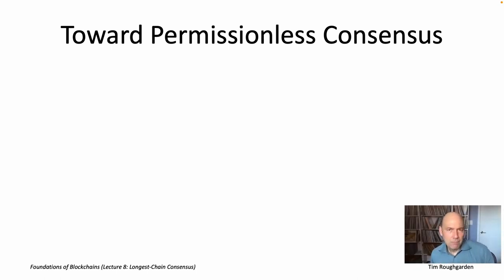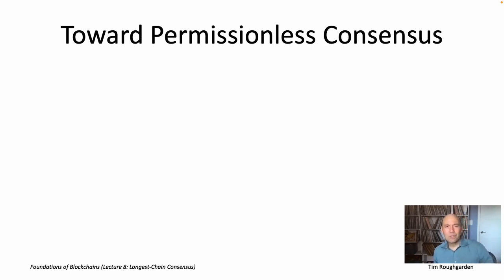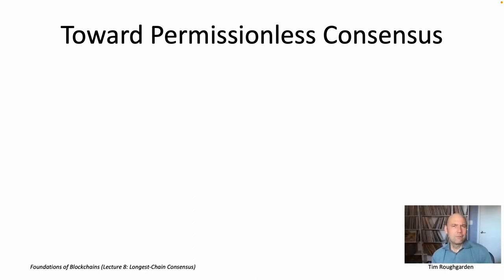The difference between permissionless and permissioned consensus is actually really big. Permissioned consensus is like IBM buying seven servers — you initialize each with the names of the other six, and that's fine. But to run a full node for Bitcoin or Ethereum, you don't have to register with anybody. You don't give anyone a credit card or social security number. You just download software from the web, fire it up, and you get to start running the protocol — you get to join the party. It really wasn't until Bitcoin came out in 2008 that we had any reasonable solutions to permissionless consensus.